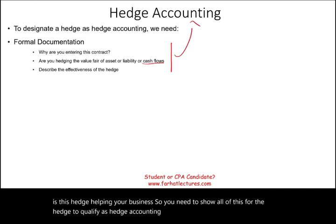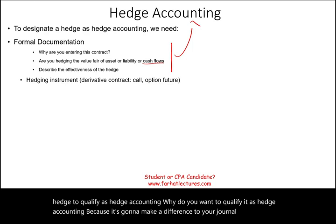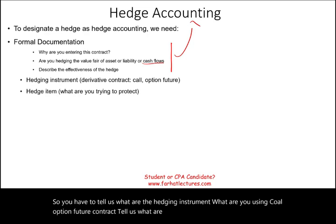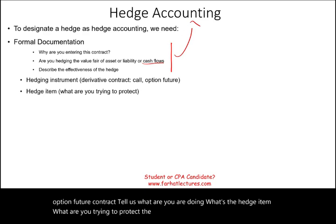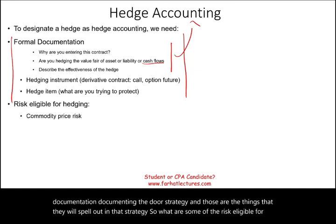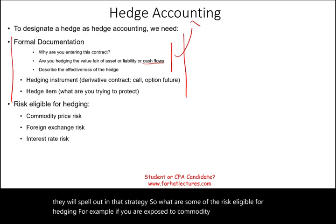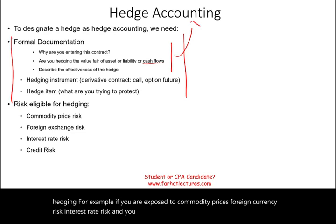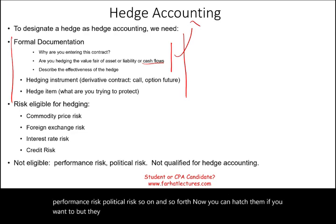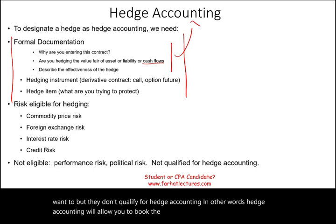Qualifying as hedge accounting makes a difference to your journal entries. You have to tell us what are the hedging instruments — call option, future contract — what is the hedge item, and management should have documentation spelling out their strategy. Some risks eligible for hedging include commodity prices, foreign currency risk, interest rate risk, and inventory or investment risk. You are not eligible to do hedge accounting for performance risk or political risk — you can hedge them, but they don't qualify for hedge accounting.